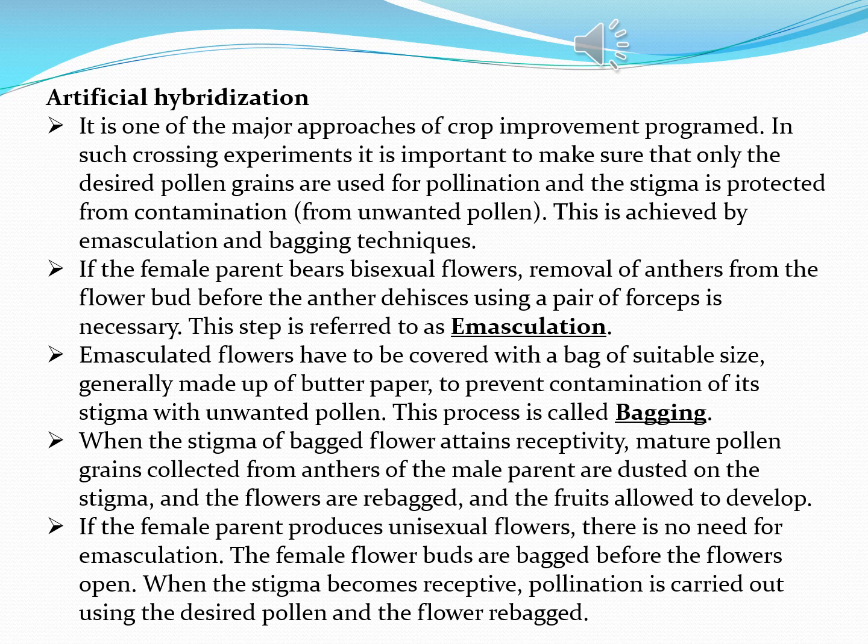If the parent produces unisexual flowers, there is no need for emasculation, because emasculation is required only when the flower is bisexual. In the case of unisexual flowers, male and female flowers are separate, so there is no need for emasculation. However, the female flower should be covered with bags to avoid contamination by unwanted pollen. This entire technique is called artificial hybridization, done to bring improvement in crops, achieved by emasculation and bagging techniques.